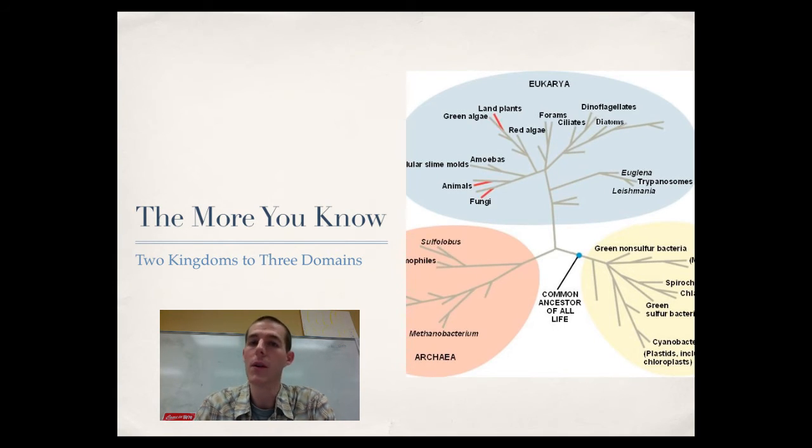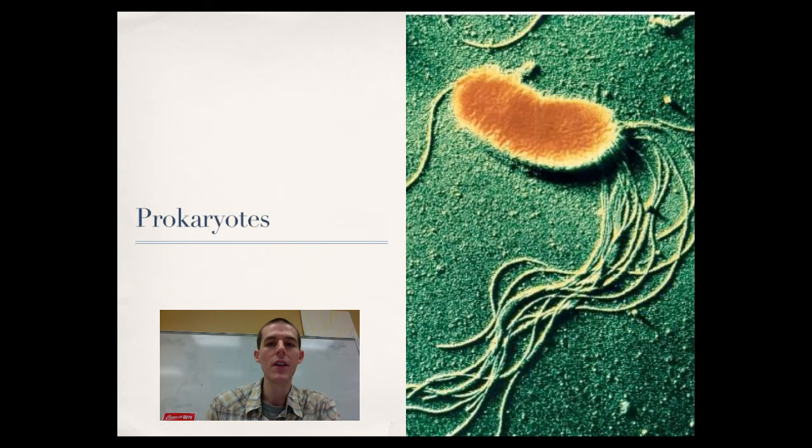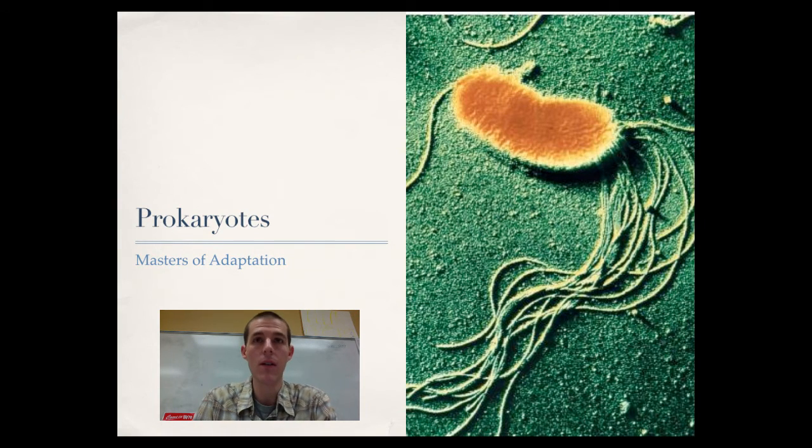So scientists finally decided that the best way to divide the living world up was into three major domains. And if you remember yesterday, a domain is above a kingdom. The three domains of life are now the archaea, eukarya, which are eukaryotic organisms, and prokarya, which are prokaryotic organisms. Also know the archaea are also prokaryotes. That figure on the right shows three major domains of life. Interesting thing to note is the branches that are red, land plants, animals, and fungi are the only multicellular organisms. So most groups of living organisms on earth are single cells. They're unicellular.